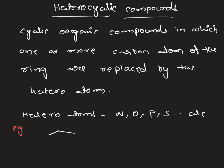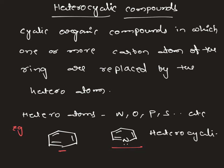If you take benzene — it is a cyclic organic molecule and an aromatic molecule. Here, one of the carbons I am replacing and I am introducing nitrogen. This carbon is replaced with nitrogen, and this is called a heterocyclic compound. In the cyclic carbon skeleton, we have replaced one carbon with nitrogen, and this we call a heterocyclic molecule. The name of this compound is pyridine.